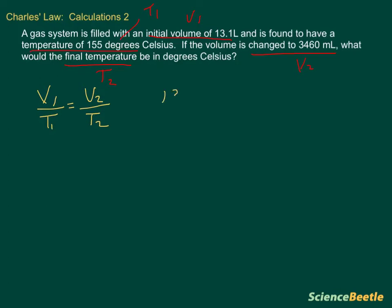Our V1 is 13.1 liters divided by our T1, which is 155 degrees Celsius, equals to our V2, which is 3460 milliliters, divided by our T2, which is what we're trying to find.